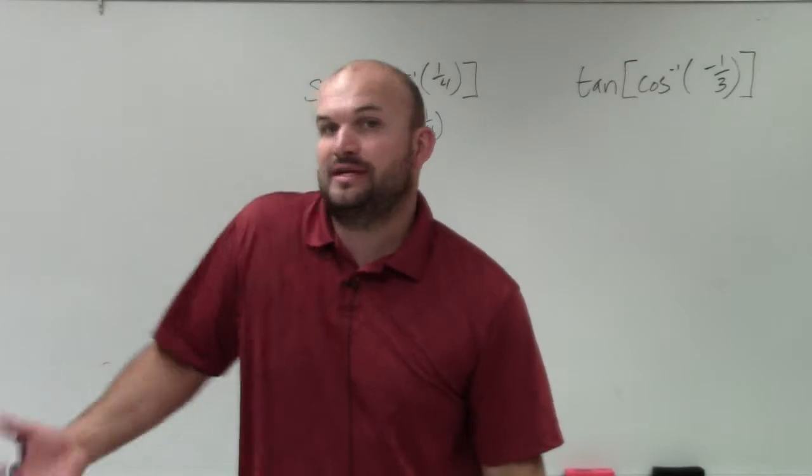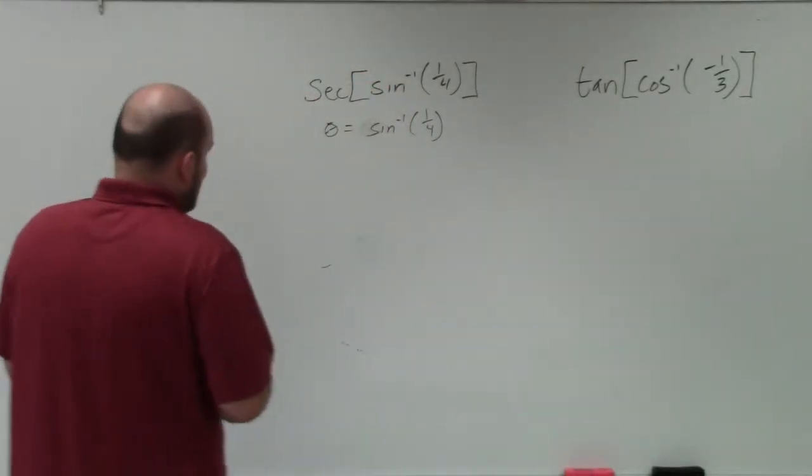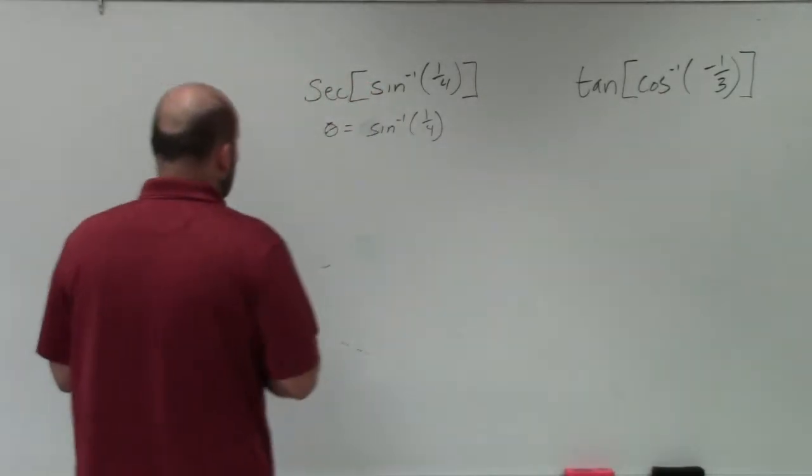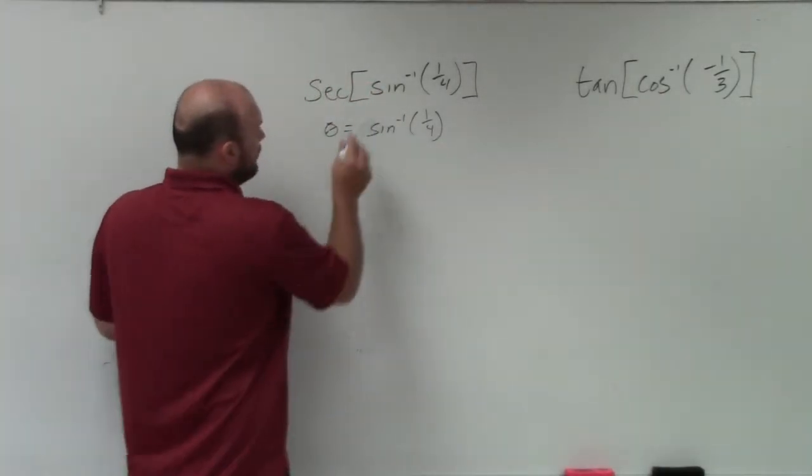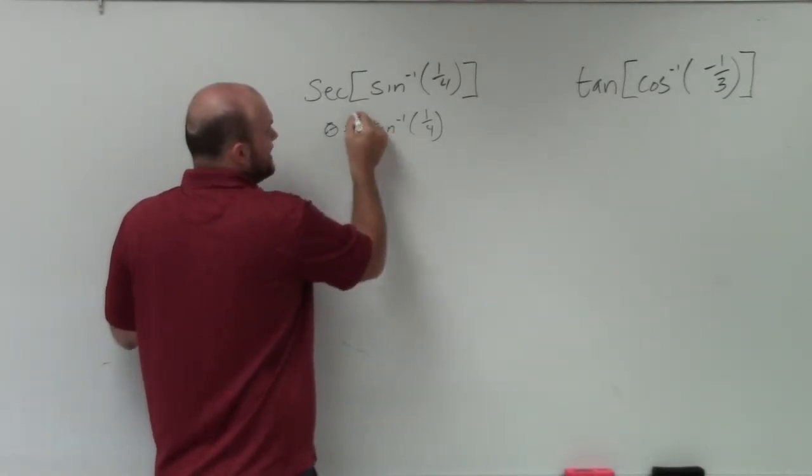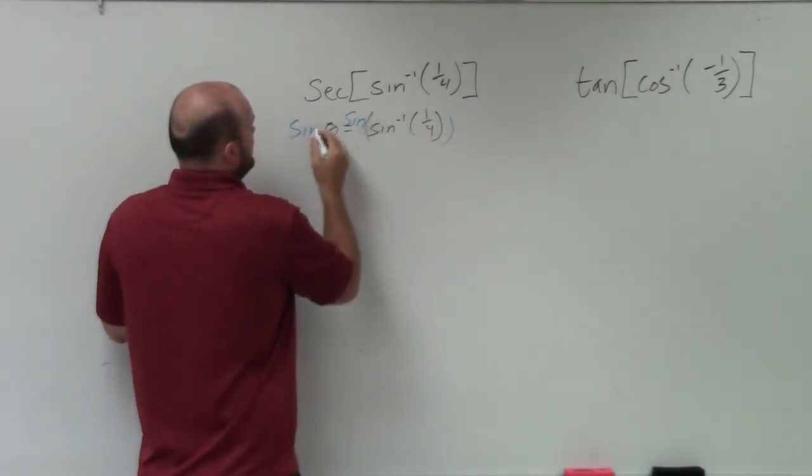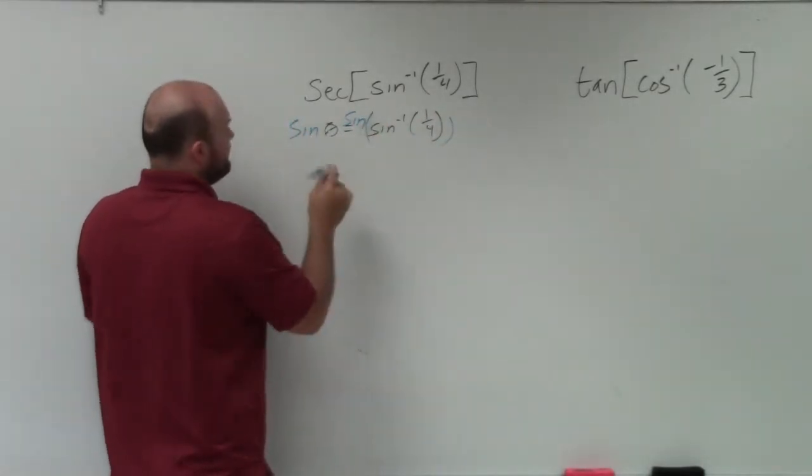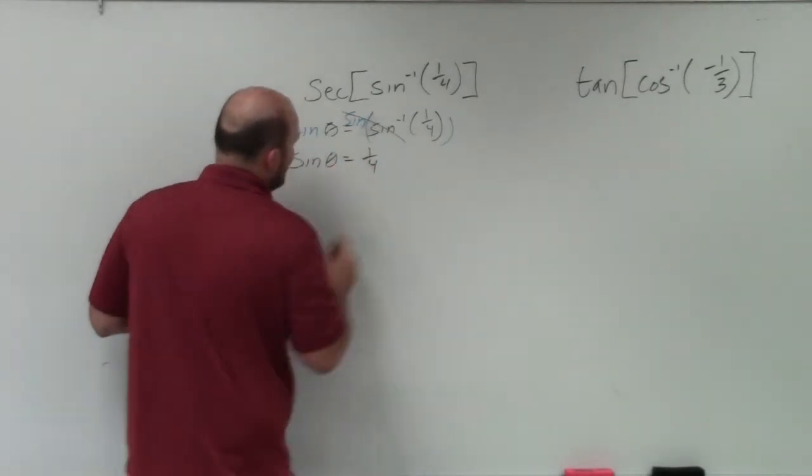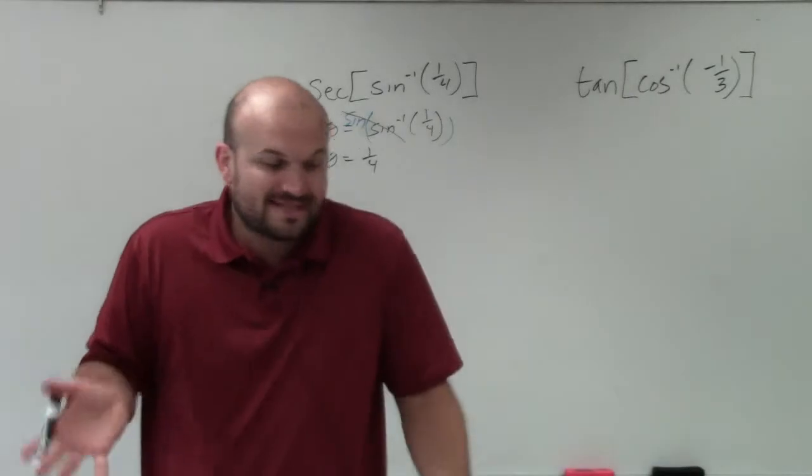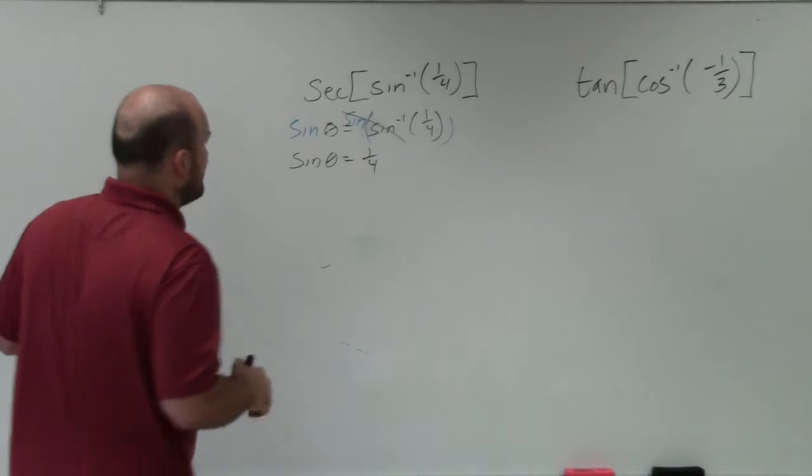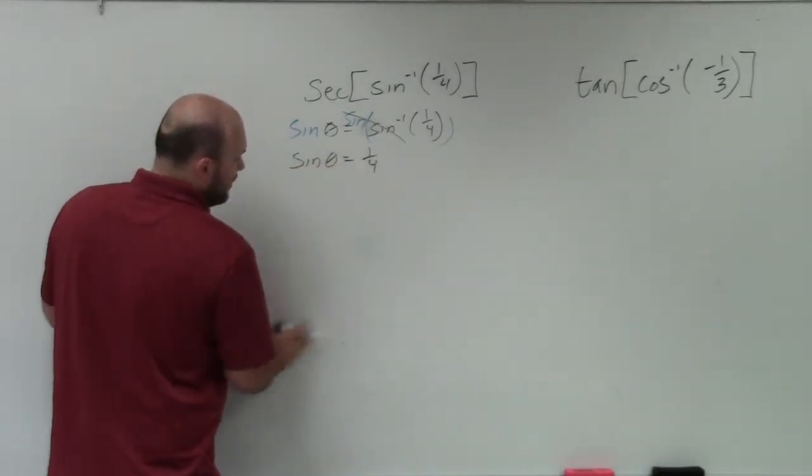Now, if you had a calculator, you could easily plug that into your calculator. But assuming we don't have a calculator, how are we going to figure out what is theta, so I can take the secant of it? Well, what I realize is to solve for theta, I'm going to have to undo the inverse sine. So to do that, I'm going to take the sine of both sides. And therefore, by doing that, what I have now is the sine of theta is equal to 1/4. That doesn't do much for telling me what exactly theta is. It doesn't give me a value, but what this does tell me is the sine of theta is equal to 1/4.